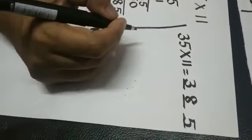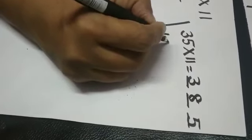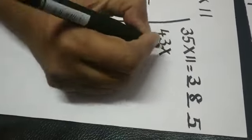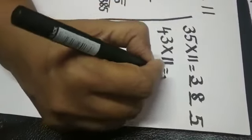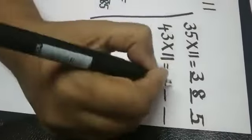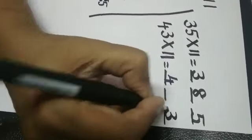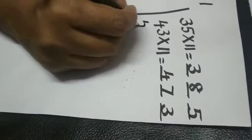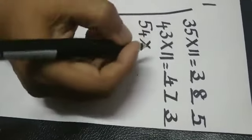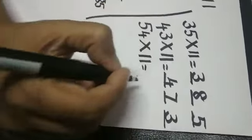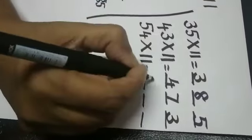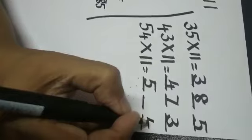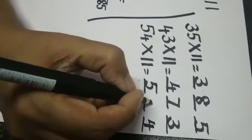I would like to give some more examples to do as one-line answers. The next number is 43 multiplied by 11: draw three blanks, write the first number, then the last, and four plus three is seven. Next, 54 multiplied by 11: draw three blanks, write five, then four, and the sum of the two digits five plus four is nine.